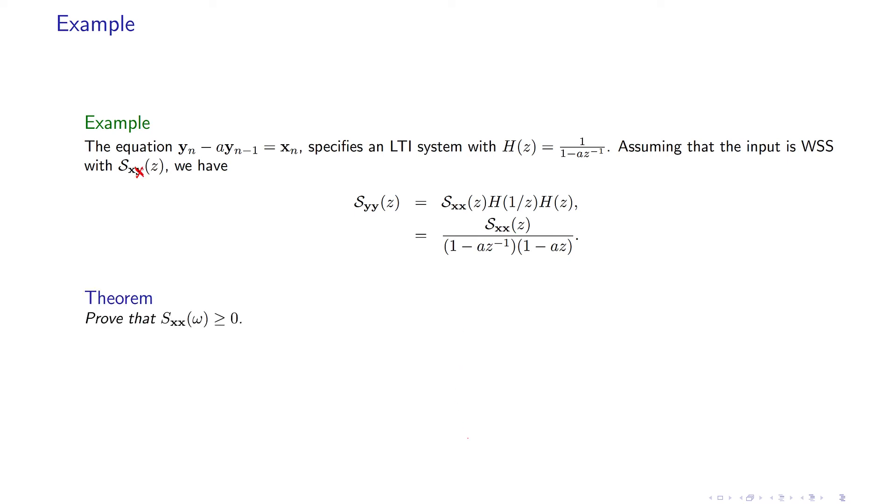And you can easily prove that if you replace this z by e to the power j omega, so you get 1 over z conjugate, this becomes S_yy of omega, the power spectrum of y becomes S_xx of omega, which is a real non-negative number, divided by 1 minus a conjugate e to the power j omega.